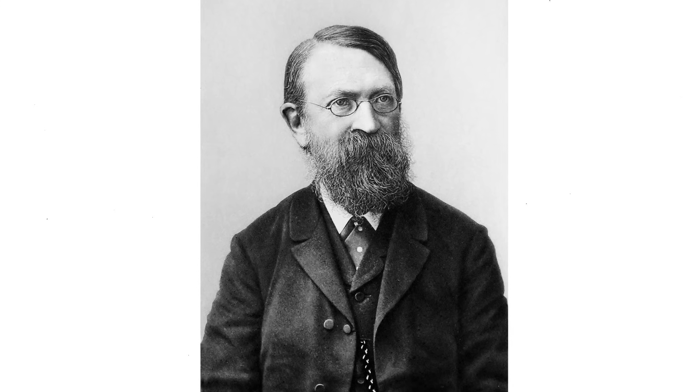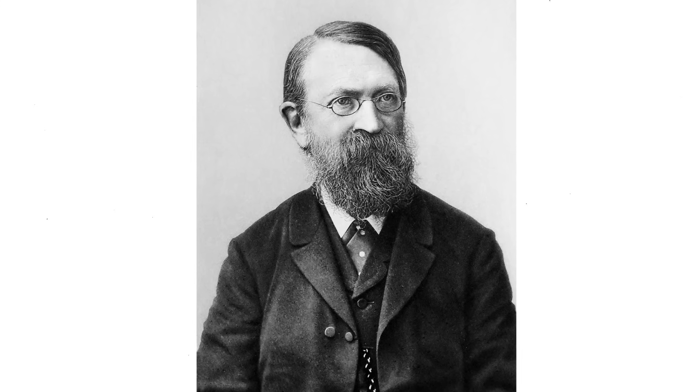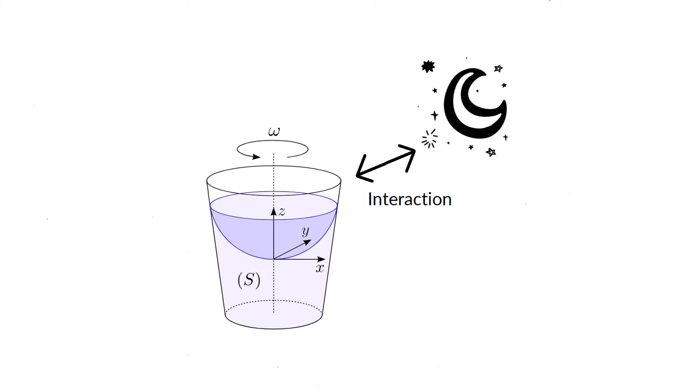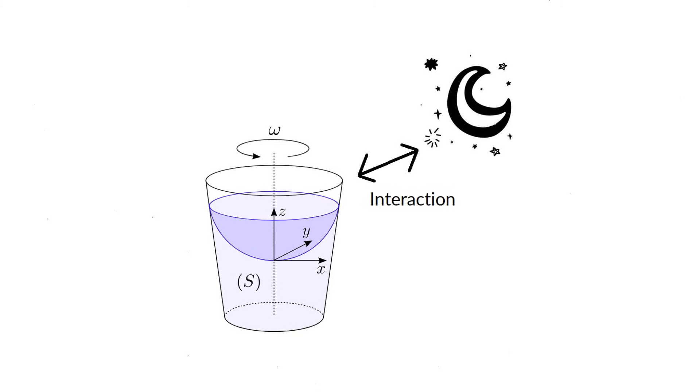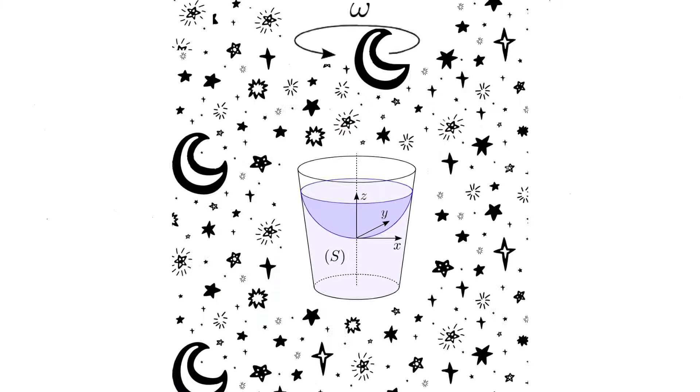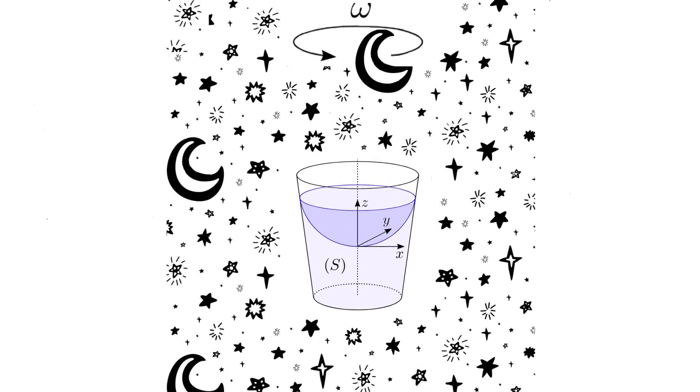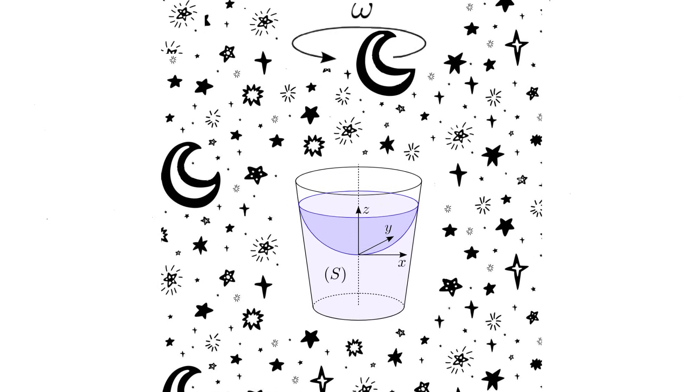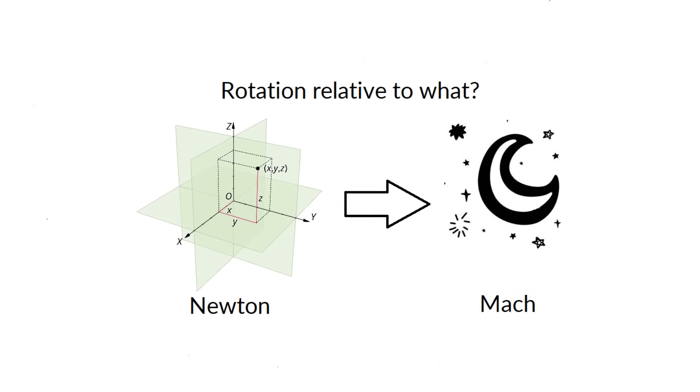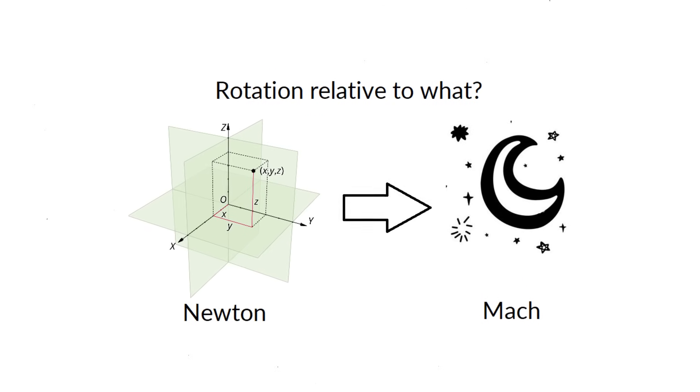Ernst Mach challenged Newton's ideas of absolute space, time and motion, but never put his critique into mathematical terms. He was first to strongly claim that inertia must have an origin as an interaction with the rest of the universe, that local physical laws must be determined by the large-scale structure of the universe, and that inertial motion is not motion in the absence of causes, but motion caused by background environment. Other great physicists developed his ideas further.